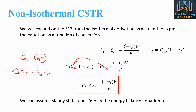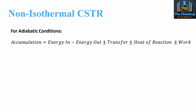We can assume steady state conditions which will simplify our energy balance equation. For adiabatic conditions, there is no energy or mass transfer to or from the surroundings. Think of the reactor with a jacket — non-isothermal means the temperature within the reactor will vary, and adiabatic means we don't have any heat or mass coming in or out of the system.